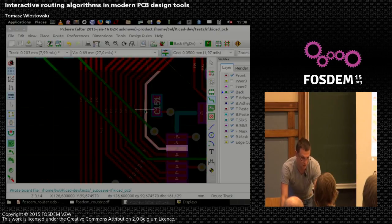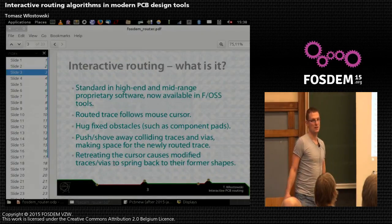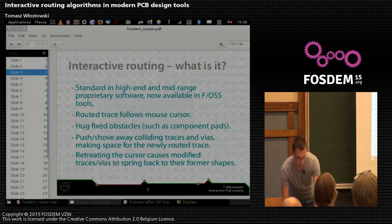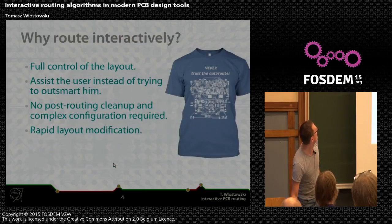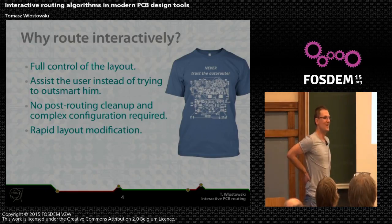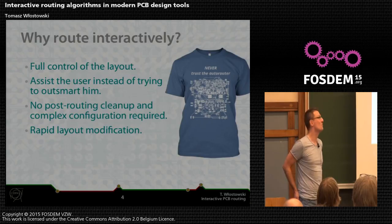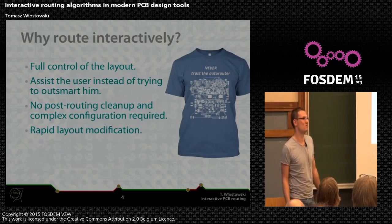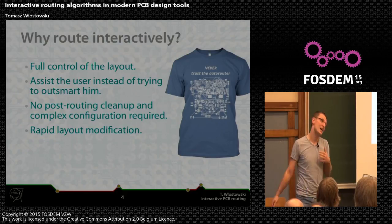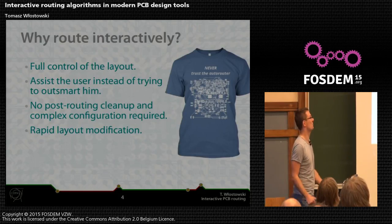Same goes for dragging objects. This is what interactive routing is about, and it's a de facto standard in all proprietary software, from mid-range to high-end products. The main reason is saving time. It also gives you full control — or almost full control — of your layout, because in the end you decide what traces get pushed and how the traces are laid. With an autorouter, you don't have such control, and even if you try one, you first have to spend a lot of time configuring it, then cleaning the results.